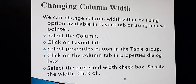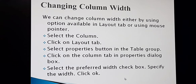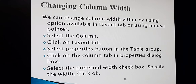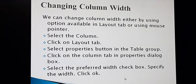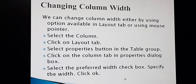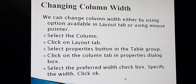The next topic of today's class is changing column width. After changing the row height, we can change the column width. If you wish to change the column width, you can do so in two ways: either by using the Properties option in the Layout tab, or by right-clicking and using the mouse. Both ways can change the column width. The first way: select the column you want to change, right-click over the selected column, and from the pop-up menu select Table Properties.